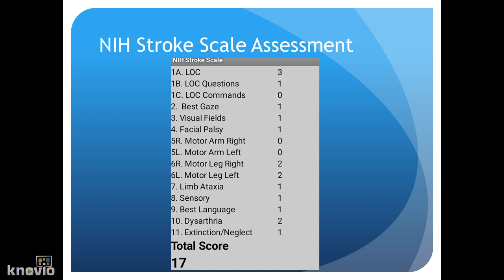For section 8, we're testing sensation. If they have full sensation and no sensory loss, that's zero points. For section 9, we're testing language. If they're able to communicate effectively and they don't have any aphasia, they'll receive zero points.